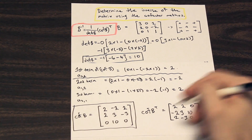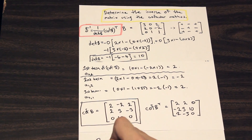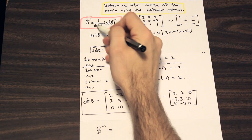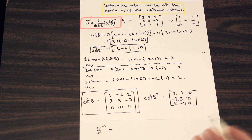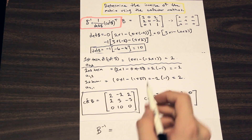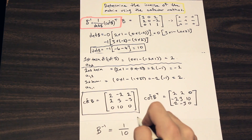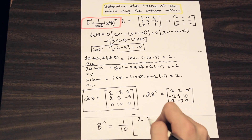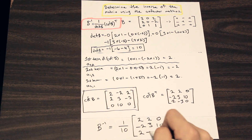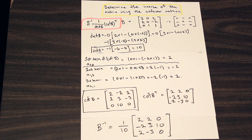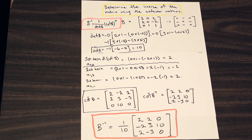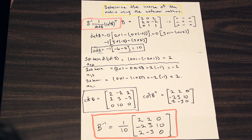Plugging everything into the formula: the inverse of B equals 1 over 10, times the matrix [2, 2, 0; −2, 3, 10; 2, −3, 0]. That is the final answer. If you want to multiply 1/10 into each term you can, but I highly suggest leaving it in this form since there's less calculation and you're less prone to mistakes. Check with your professor on the preferred format.